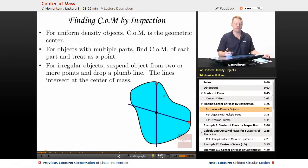Well, with some objects we can do it by inspection. For uniform density objects, the center of mass is going to be the geometric center of that object.